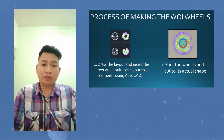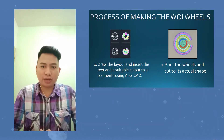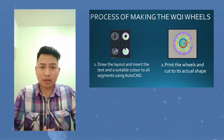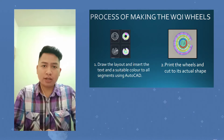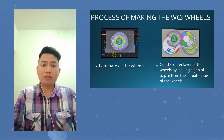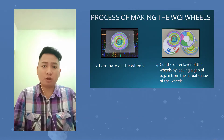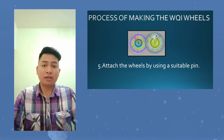The process for making WQI wheels: first, draw the layout and then insert the text and colors using AutoCAD. After that, print it out and cut it following the circular shape. Next, laminate the wheels and cut the outer layer leaving a gap of 0.3 cm. Finally, attach the wheel using the thumbtack.